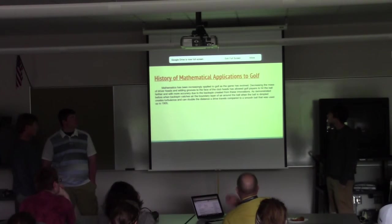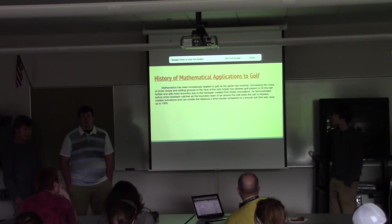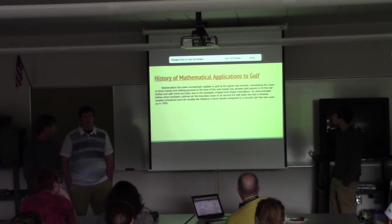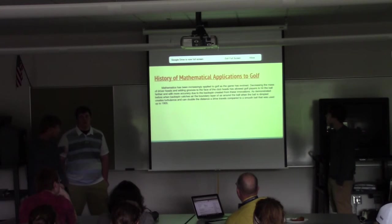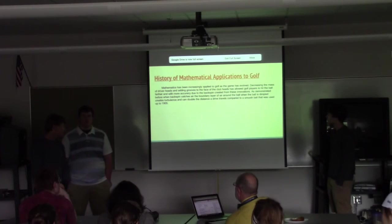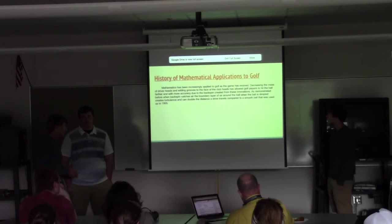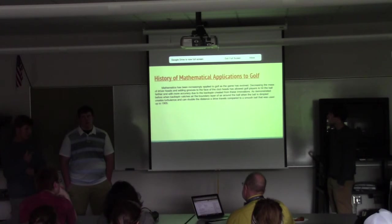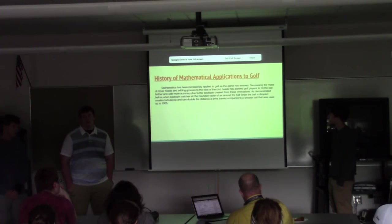This is more of how mathematics has been applied to golf throughout history. Basically, as the game has gotten on, technology has gotten better, and people try to analyze the game more. They saw that if you decrease the mass of the driver heads but still somehow make them equally as strong using better metals such as titanium, the golf players will be able to hit the ball farther and with more backspin given by the grooves. That backspin is what's going to create that turbulence from the boundary layer of air that hits it. Also, I believe in 1905, dimples were added to the ball, and these dimples allow the ball to catch more air to give it more of that backspin. This is seen to double the distance of the drive compared to when it's hit with a smooth ball.